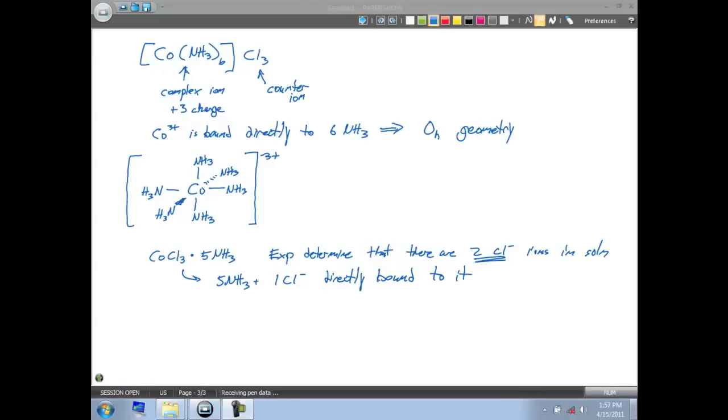So when we draw our complex ion, it's going to be a cobalt with five different ammonias and one Cl. And this isn't going to be a three plus complex ion anymore, it's going to have a two plus charge, because there are two Cl- ions that are the counter ion.